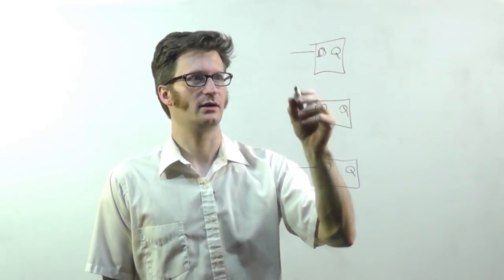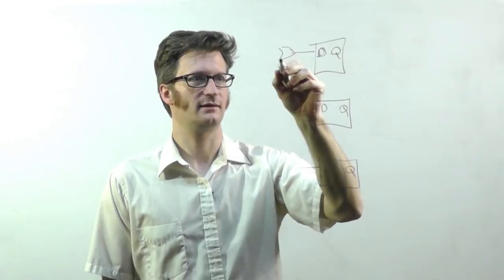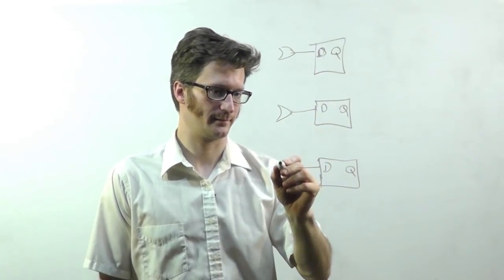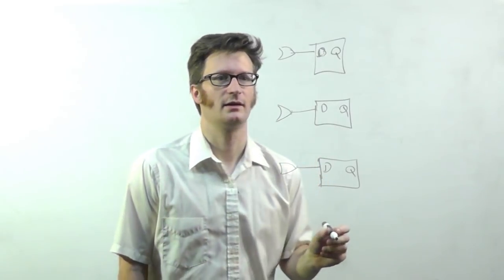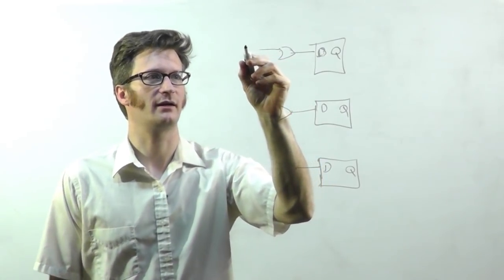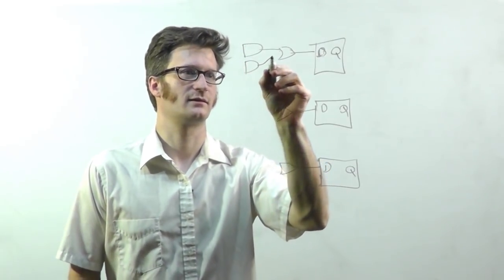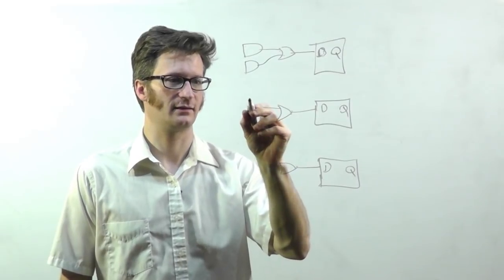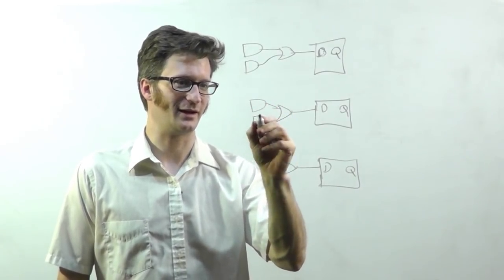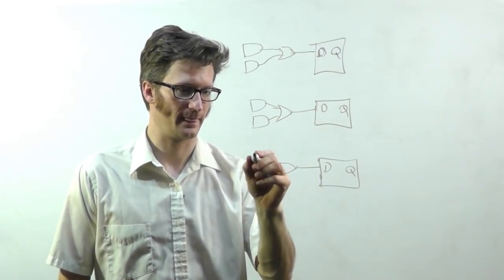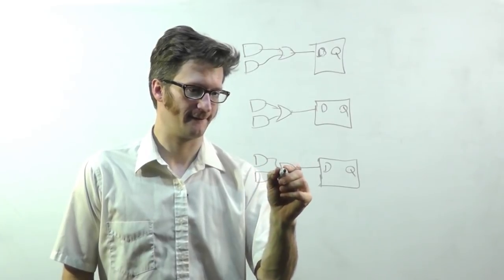And so what I'm going to do is before each D, I'm going to have an OR gate. All right, and before that OR gate I'm going to have two AND gates that allow me to select what data I'm going to put into the D input.